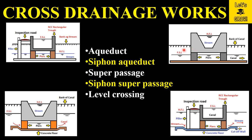As the name suggests, these are the structures which are used whenever drainages are crossing each other. The flow can take place in a canal, a river, or a stream. When a canal or a river or a stream crosses another, the structure we construct is known as cross drainage works. Based upon the elevation difference, the high flood level of the river or stream, and the full supply level of the canal, these structures are proposed.